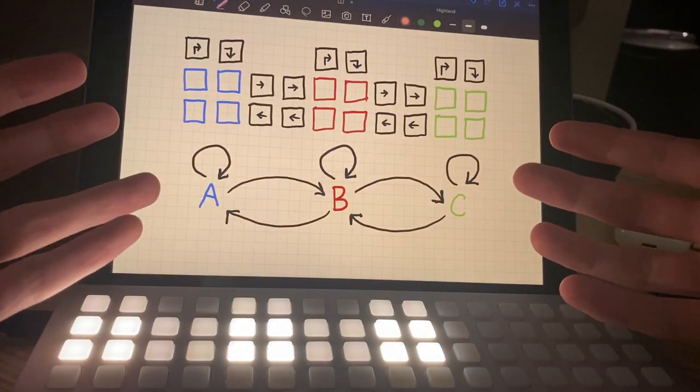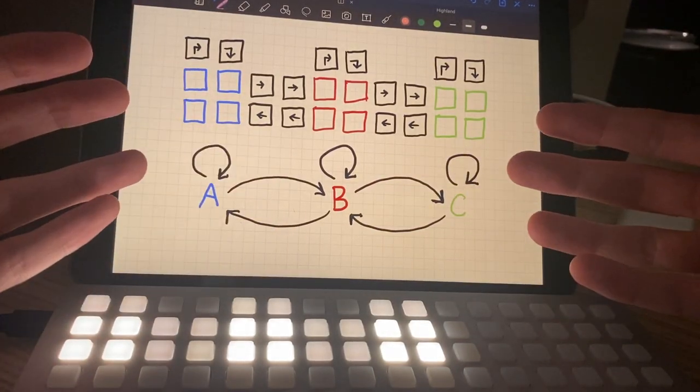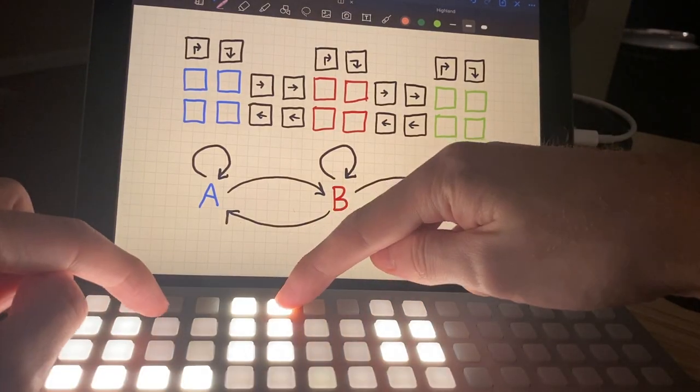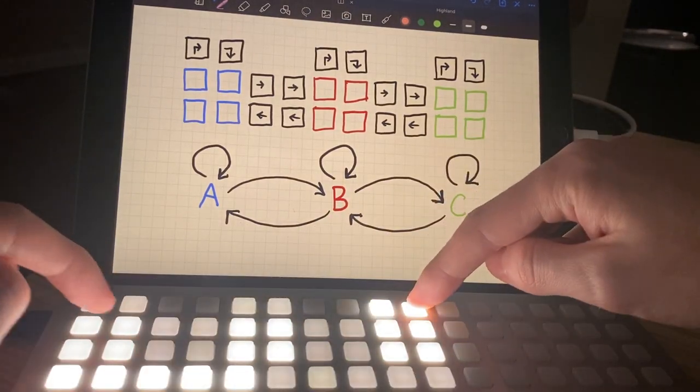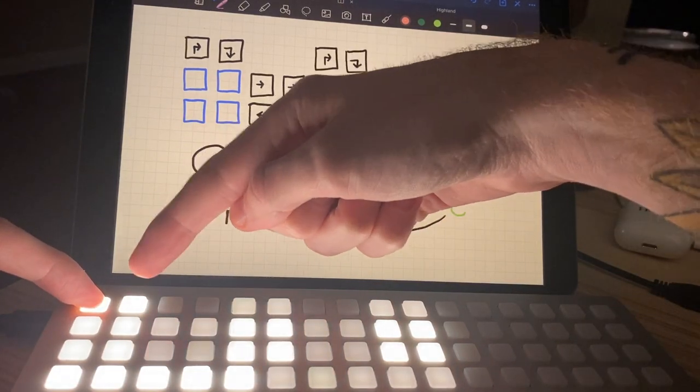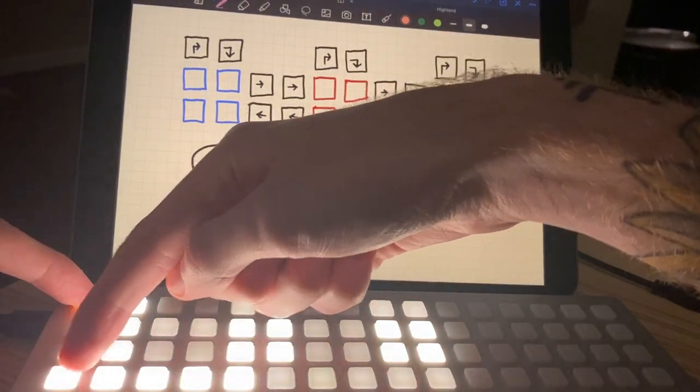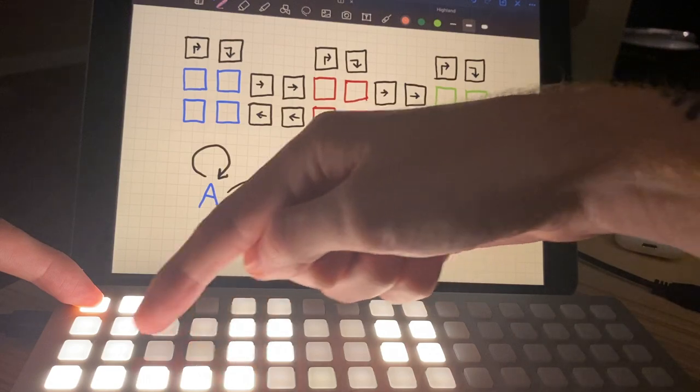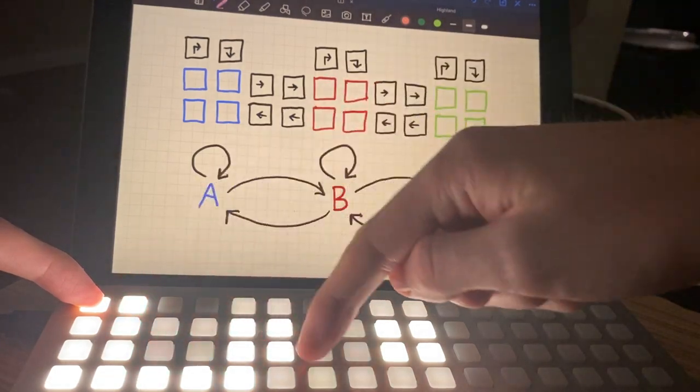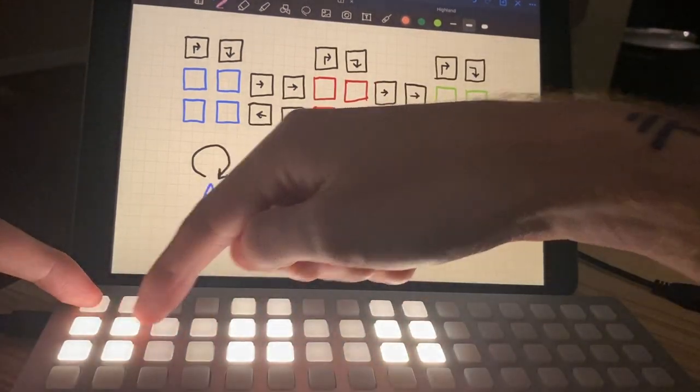We control the probability of which ones with these chains here. So when you see this lit up here, that means there's a 50% probability that we're going to go to A, and there's a 50% probability that we're going to go to B.